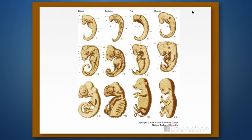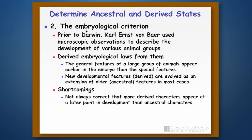Here's an example: we have a lizard, a tortoise, a pig, and a human embryo. At the earliest stages in development, they look very similar to one another — they have common features. Then as they develop, they start to get distinguishing features that separate them from each other. The common features early on indicate they all share a common ancestor as vertebrates, and later they begin to separate according to unique features. There are shortcomings to this approach as well — it's not always correct that the more derived characters appear at a later point in development. Sometimes you get insertion of features that are newer in the developmental process.